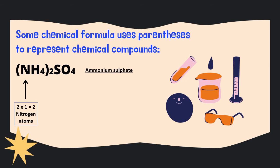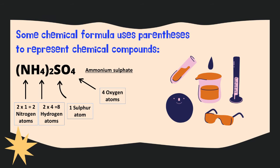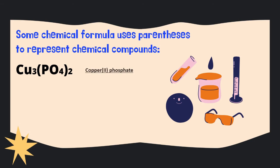Let's count it together. Nitrogen has no subscript beside it but is inside the parenthesis. Hence, we have two times one, giving two nitrogen atoms. Hydrogen has a subscript of 4 beside it and is inside the parenthesis. Hence, we have two times four, giving eight hydrogen atoms. S, which represents sulfur, has no subscript, meaning we have only one sulfur atom. Oxygen has a subscript of 4 beside it, giving four oxygen atoms. In conclusion, ammonium sulfate consists of two nitrogen atoms, eight hydrogen atoms, one sulfur atom, and four oxygen atoms.